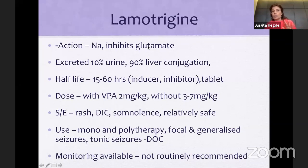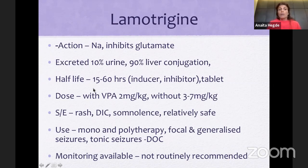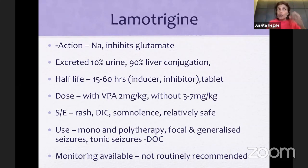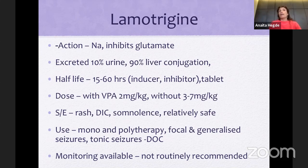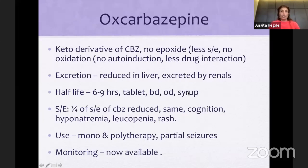Lamotrigine works only through sodium channels and glutamate, but it is very slow acting. It is mainly conjugated by the liver and available in 25 mg, 50 mg, and 100 mg tablets. When combined with sodium valproate, it is the best anti-epileptic drug combination — like a magical combination. When using the combination, drop the valproate dose a little, then add lamotrigine. The only side effect to worry about is the rash — Stevens-Johnson syndrome. It's rare but it happens. Titrate very slowly when going up, and warn every parent that if they ever see a rash to return to you immediately.